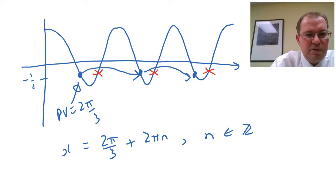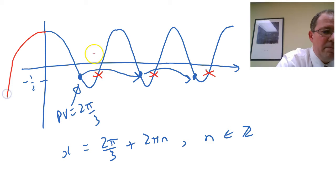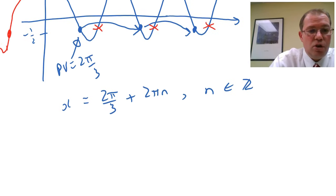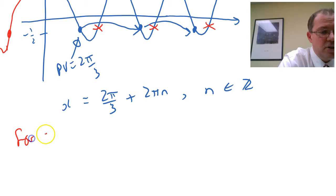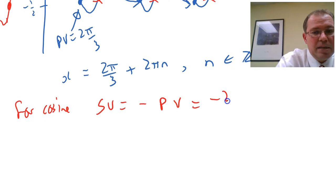Now the secondary value for cosine, the easiest way to get it is actually realise it's symmetrical in the y-axis, and the one going up the roller coaster is always the negative of the principal value. So this only works for cosine. So for cosine, the secondary value is always the negative of the principal value. So in this instance, it's minus two pi over three.